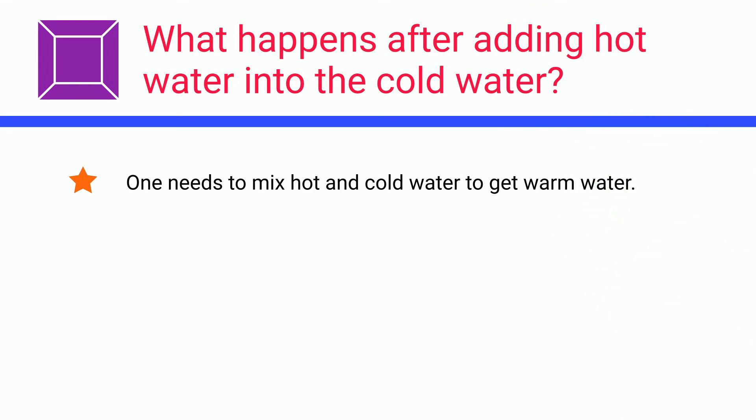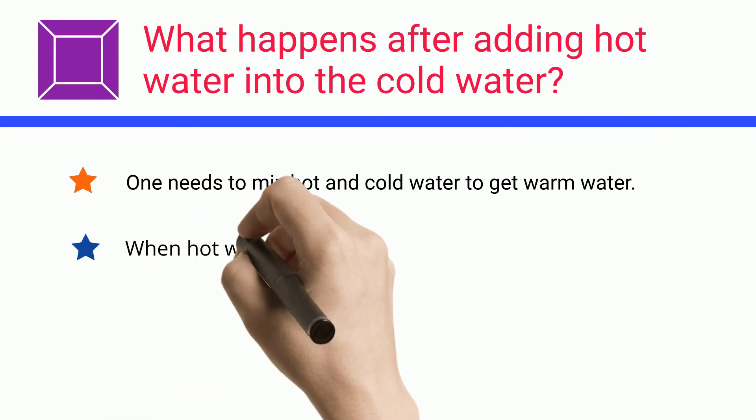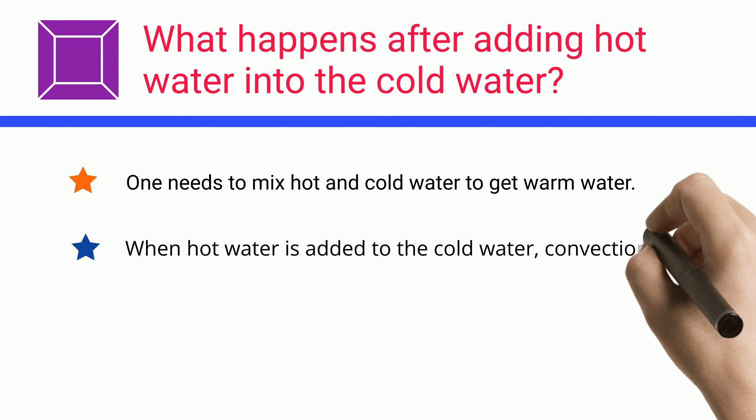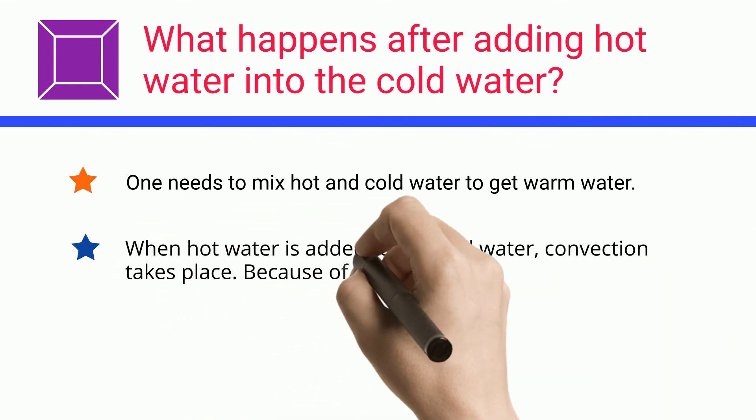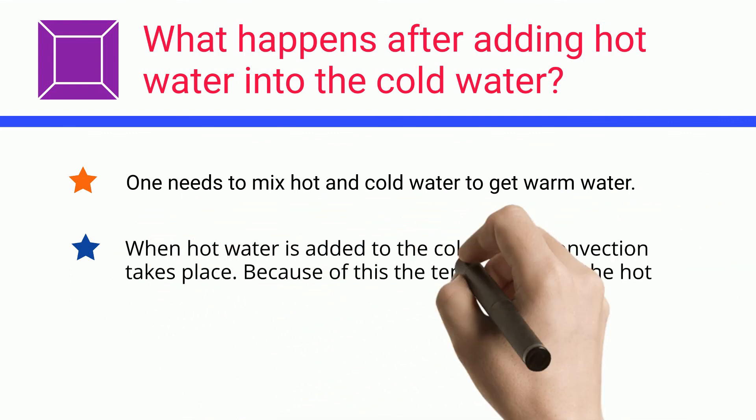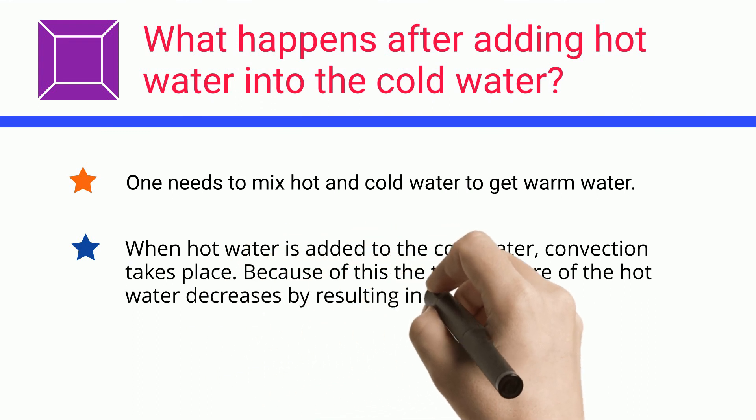What happens after adding hot water into cold water? One needs to mix hot and cold water to get warm water. When hot water is added to the cold water, convection takes place. Because of this, the temperature of the hot water decreases, resulting in warm water.